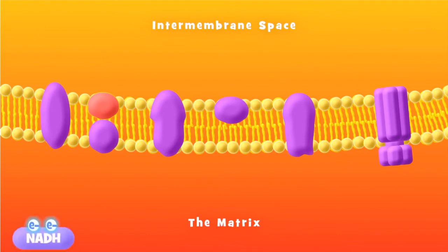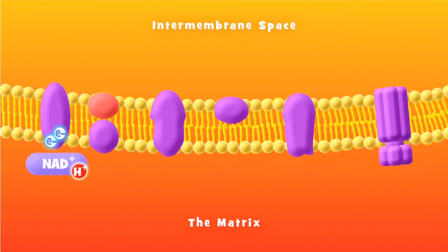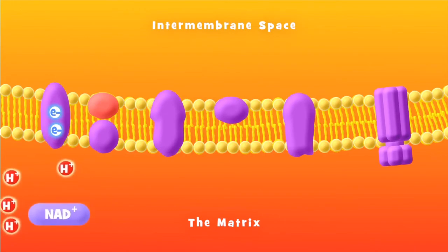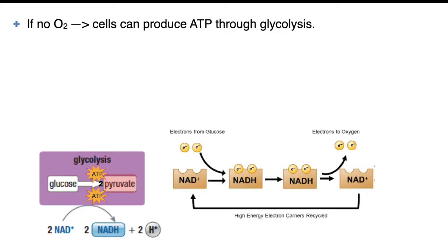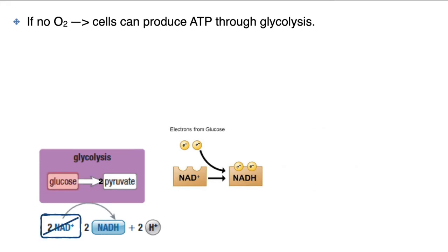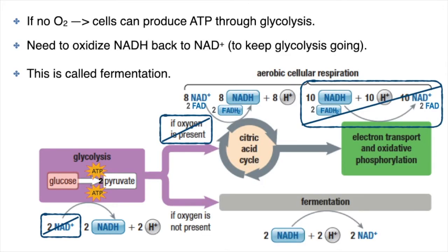Think of it like having only a limited number of taxis available to pick up passengers. If those taxis are delivering their electron passengers to the electron transport chain, then they can return to pick up more electron passengers once they are done. But without oxygen, or without a mitochondria, or if some poison blocked the electron transport chain, the electron carriers cannot return after dropping off their electrons. This means that even glycolysis would stop if evolution had not come up with a solution to this problem — and that solution is fermentation. Fermentation is essentially a chemical reaction that will oxidize NADH back to NAD+ in order to keep glycolysis going.